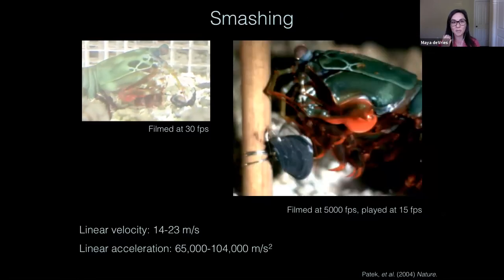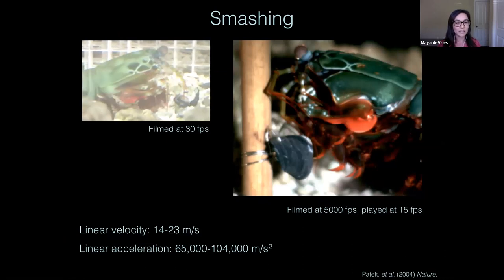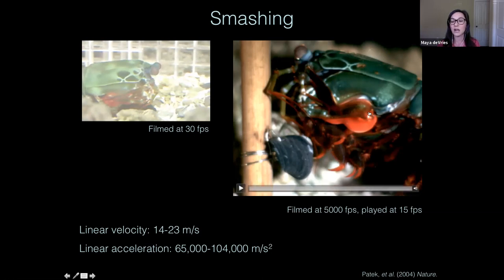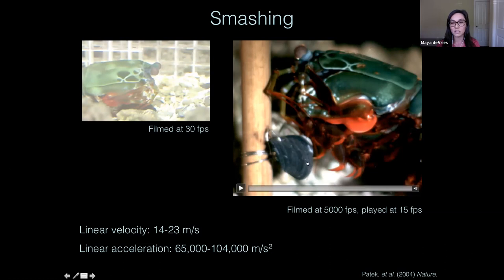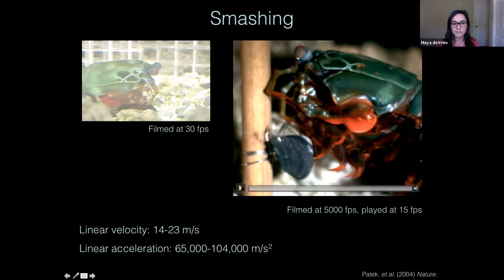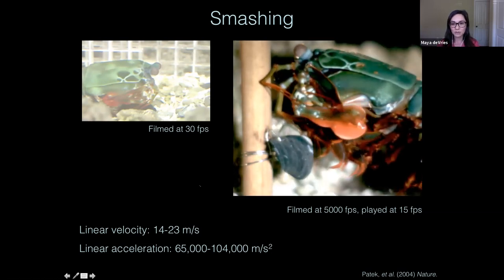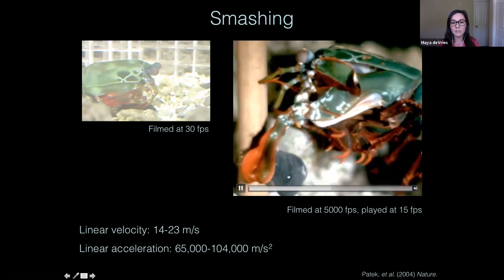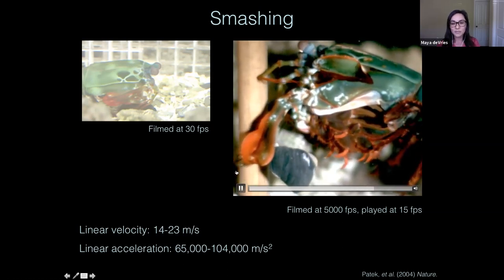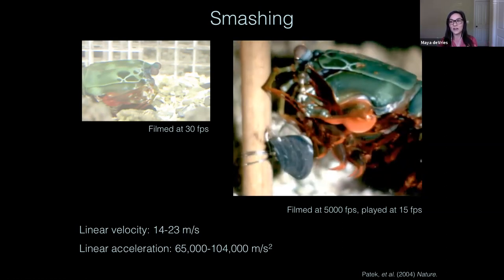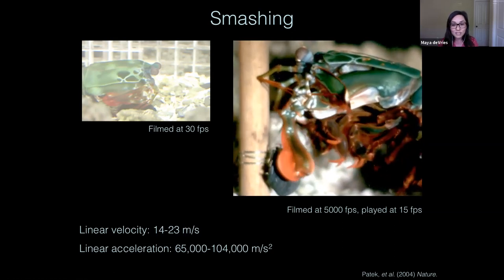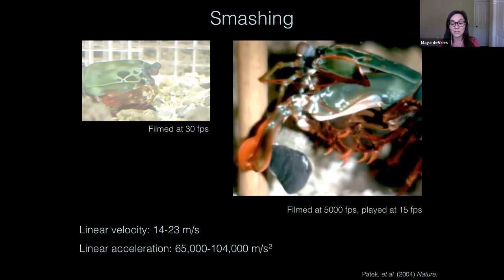Here is a video of a peacock mantis shrimp smashing a snail in real time. This is another high-speed video filmed at 5,000 frames per second, slowed to 15 fps so you can see it. You'll see this hammer-like appendage rotate forward and smash the snail. You'll see two flashes of light — one upon impact and one about 11 milliseconds later. That's cavitation. The appendage is moving so fast through water that it creates an area of low pressure, which creates a bubble. When that bubble implodes, it releases energy in the form of light and heat comparable to the sun. The initial impact is important for starting to break the shell, and the cavitation implosion also produces a forceful impact that helps crack the shell. If a mantis shrimp were human-sized and threw a baseball with the same kinematics, it would actually launch that baseball into orbit around the earth.